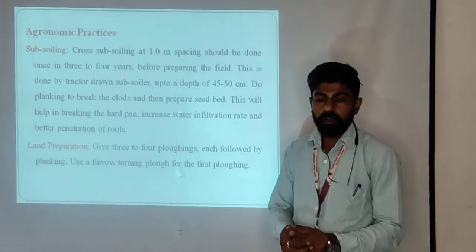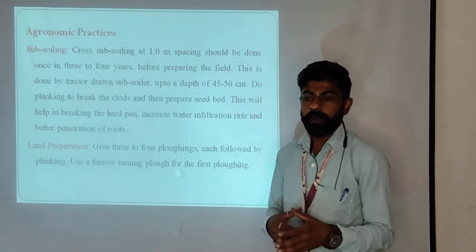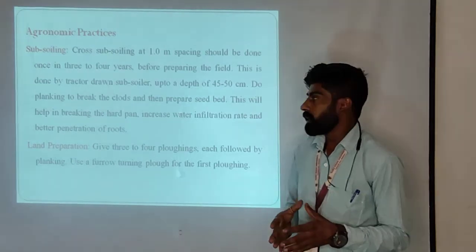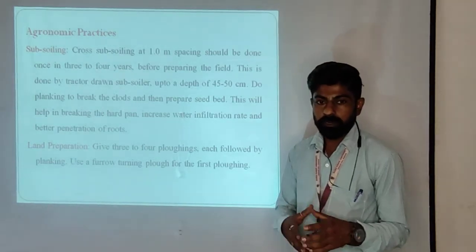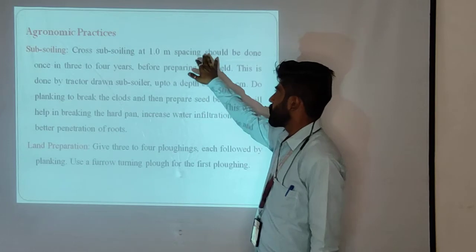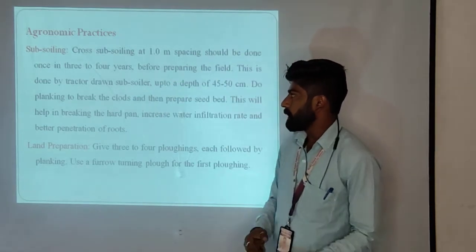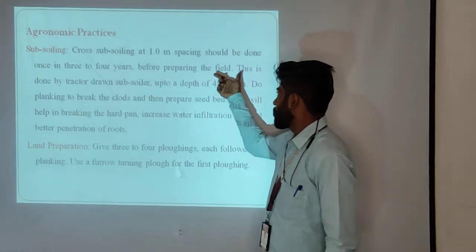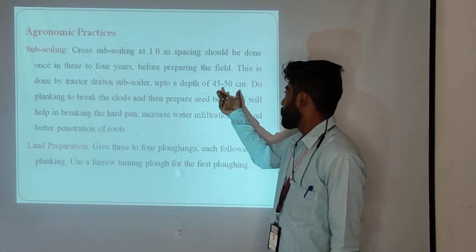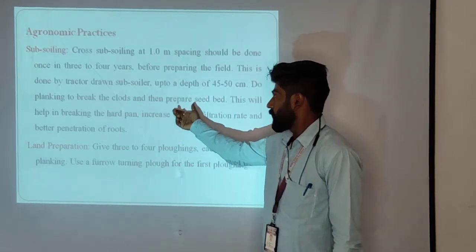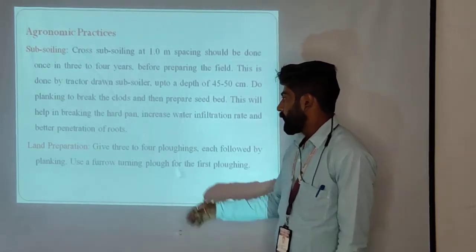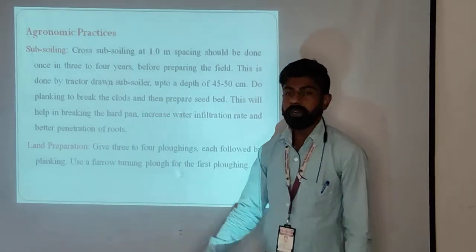Regarding land preparation, subsoiling is done because sowing of sugar cane is done through cane cuttings, requiring deep plowing. Cross-subsoiling at 1 meter spacing should be done once in 3 to 4 years before preparing the field. This is done by a tractor-drawn subsoiler to a depth of 45 to 50 cm. Do planking to break the clods and produce a good seedbed. This helps in breaking the hard pan, increasing water infiltration, and better penetration of roots.